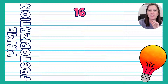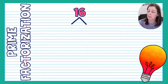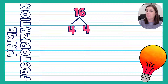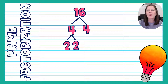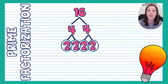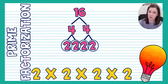One more example: let's look at 16. There are multiple ways to break 16 down, and it is composite. I'm going to choose 4 times 4 — you could also do 2 times 8 and get the same answer. Is 4 prime or composite? It's composite because I can break it down into 2 times 2. We know 2 is prime, so I circle both. Then the other 4: same thing, 2 times 2, both primes, circle them. Now I write the multiplication statement: 2 times 2 times 2 times 2.